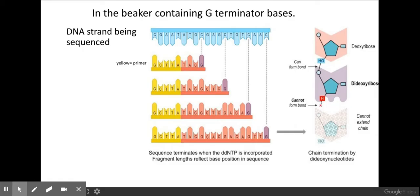This is an example of what's going on here in my terminator base G. This is the strand that is exposed on my DNA. My yellow bit here is the primer, so my primer would attach to the DNA allowing my DNA polymerase to then bind and add on my free DNA nucleotides.